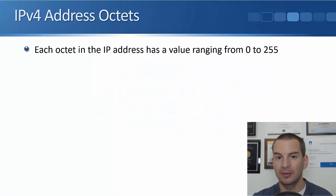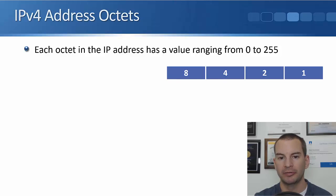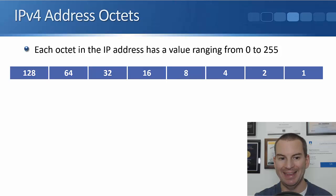Each octet in the IP address has a value ranging from 0 to 255. Let's see how we get that. It's an octet, there's 8 bits there. Let's count them out: 1, 2, 3, 4, 5, 6, 7, 8 bits.